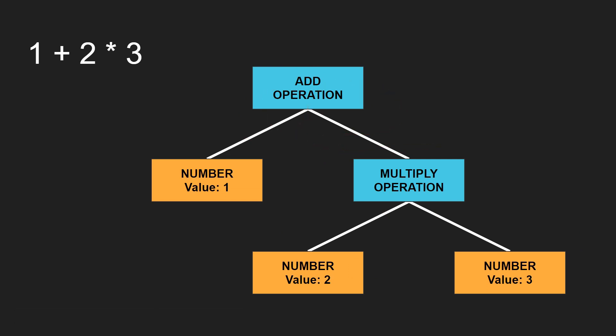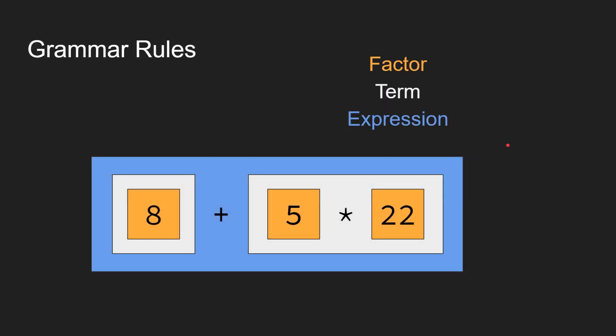So you can see how the parser will build up a tree with the correct order of operations. I also want to make it clear that each expression or term can have zero or more operators. In this case we only have a single multiply operation, but we might have another divide operation afterwards. And in this term we don't actually have any multiply or divide operation, so we are just looking for a single factor.